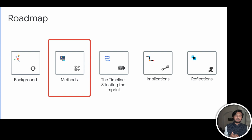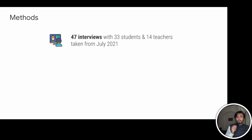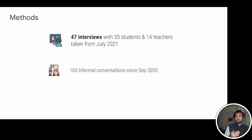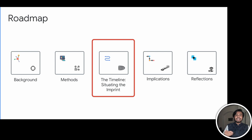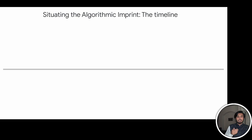Before we get to the events, let's talk a little bit about the methods. This project captures more than a year-long community engagement, reporting 47 interviews with 33 students and 14 teachers taken from July 2021. However, since September of 2020, we've actually had more than 100 informal conversations. Since this was not an easy-to-access community, these conversations helped gain community trust and engagement. There are two rounds of interviews — one that happened towards the start of the project and one that happened towards the end. With the methods in mind, let's stitch the timeline.